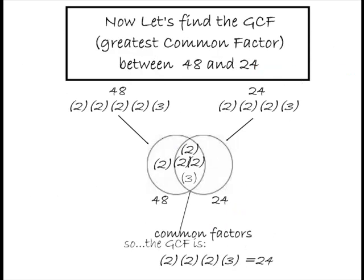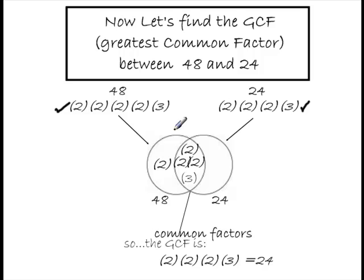Now that we know how to find the prime factorization of a number using a factor tree, let's find the greatest common factor between two numbers. This is our next step in our factoring process. I've taken the numbers 48 and 24 and written out their prime factorizations. Then I've used a technique using two circles — it's called a Venn diagram. We're not going to use this for very long, but I just want to show you what it's all about.